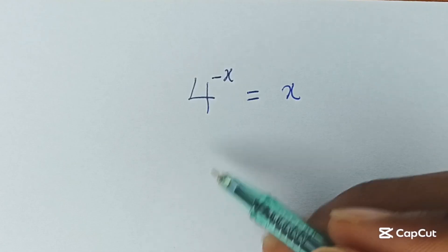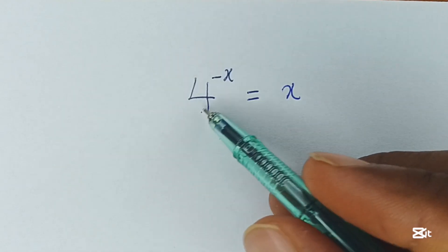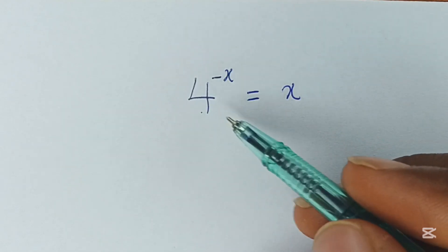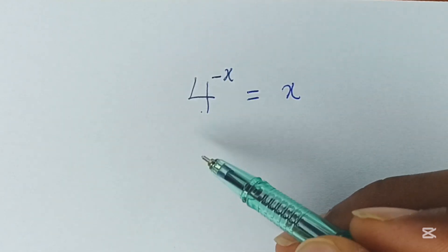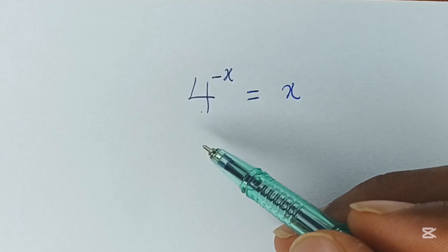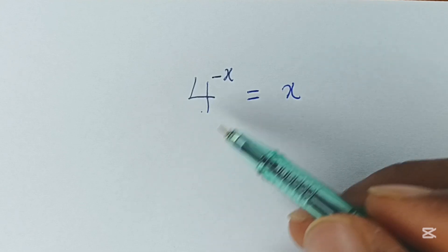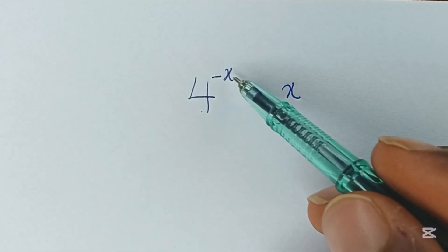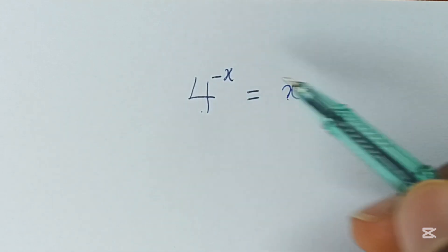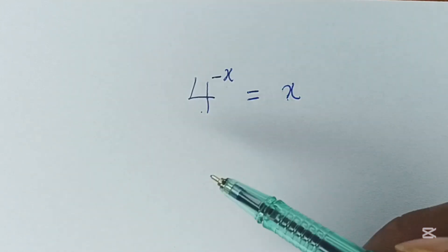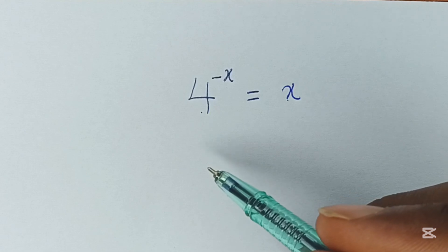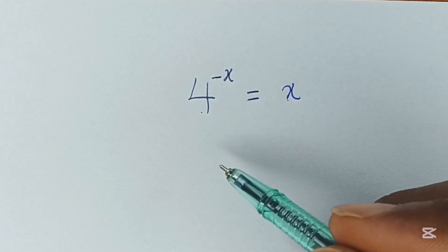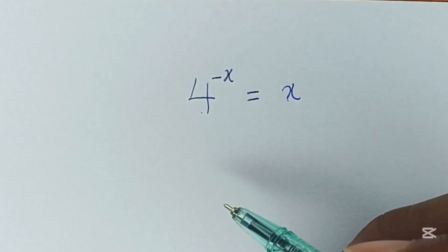Let's solve this equation together. It says 4 to the power of negative x is equal to x. How do we solve this? The main problem with this equation is that there is both x in the base and in the power, so it will be hard for many students to solve. But here is a simple solution.